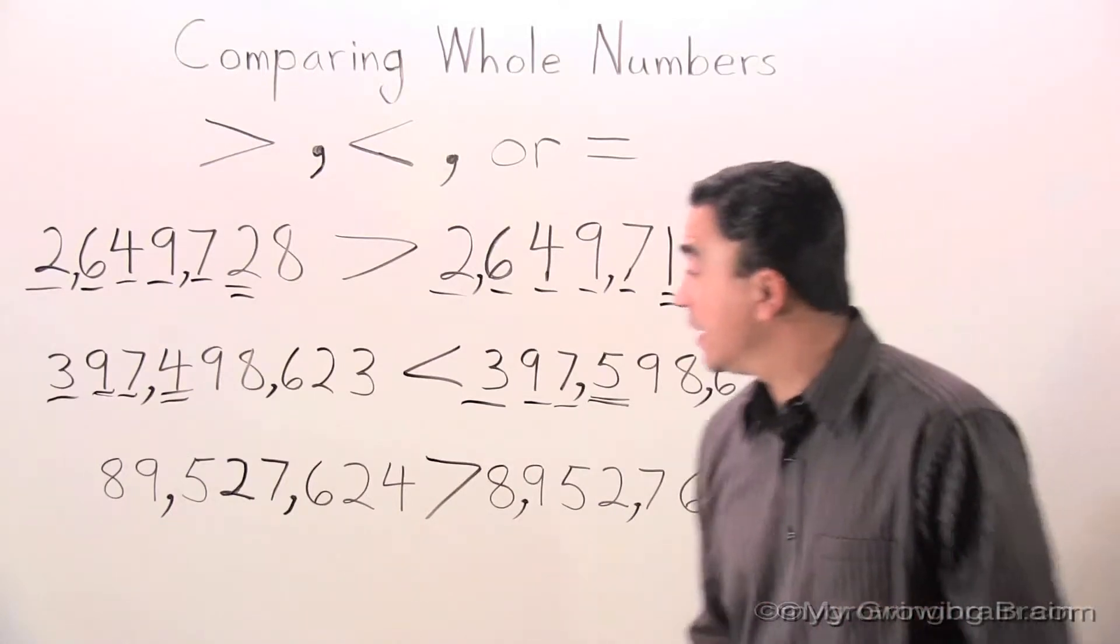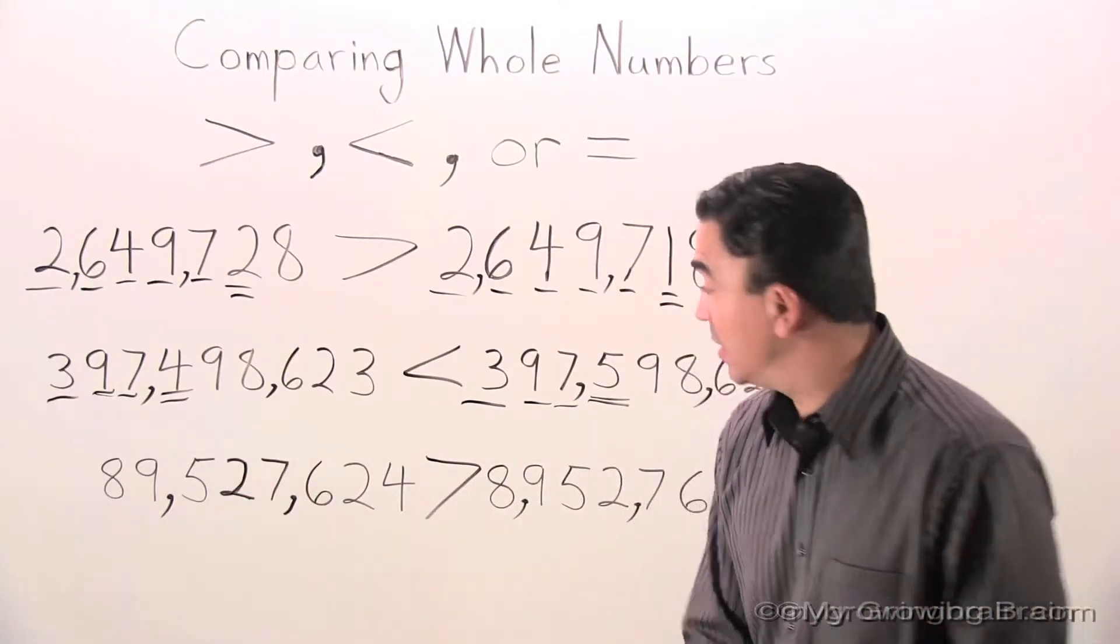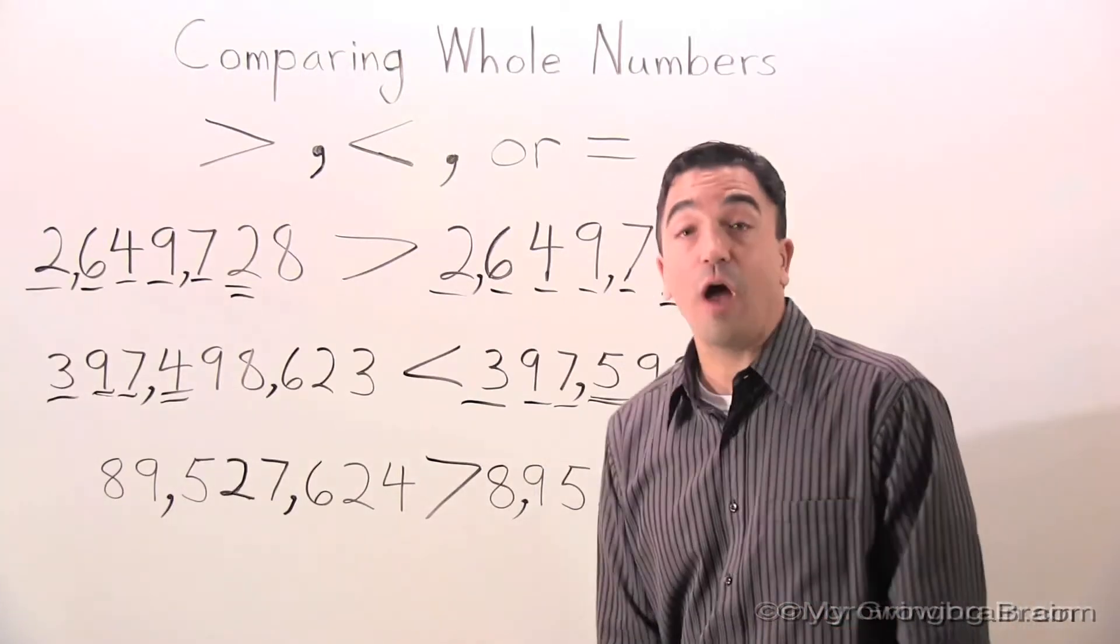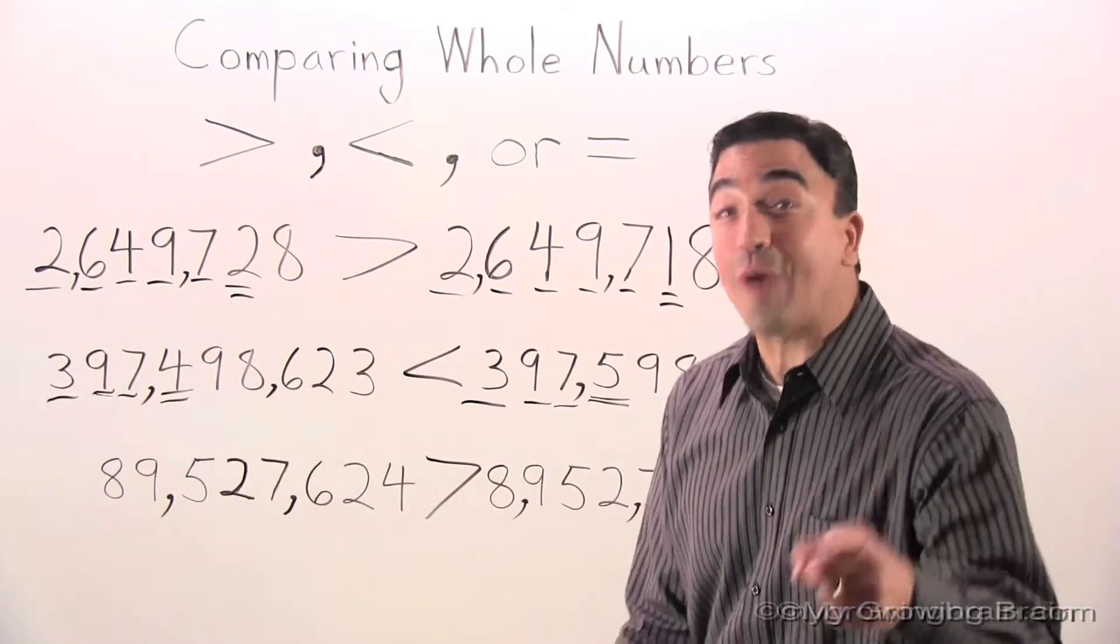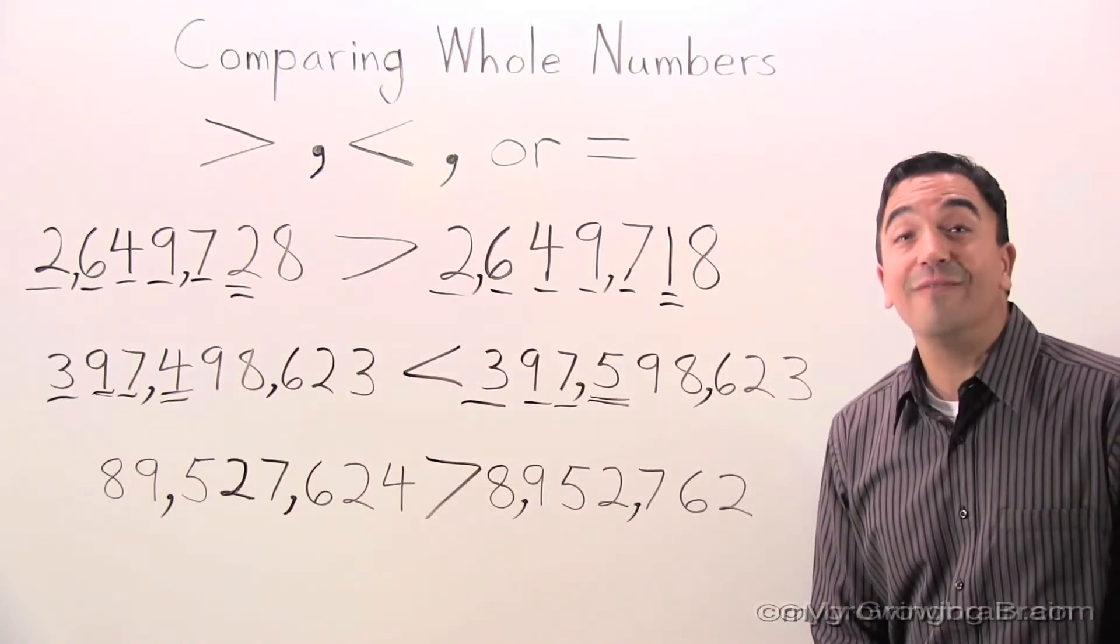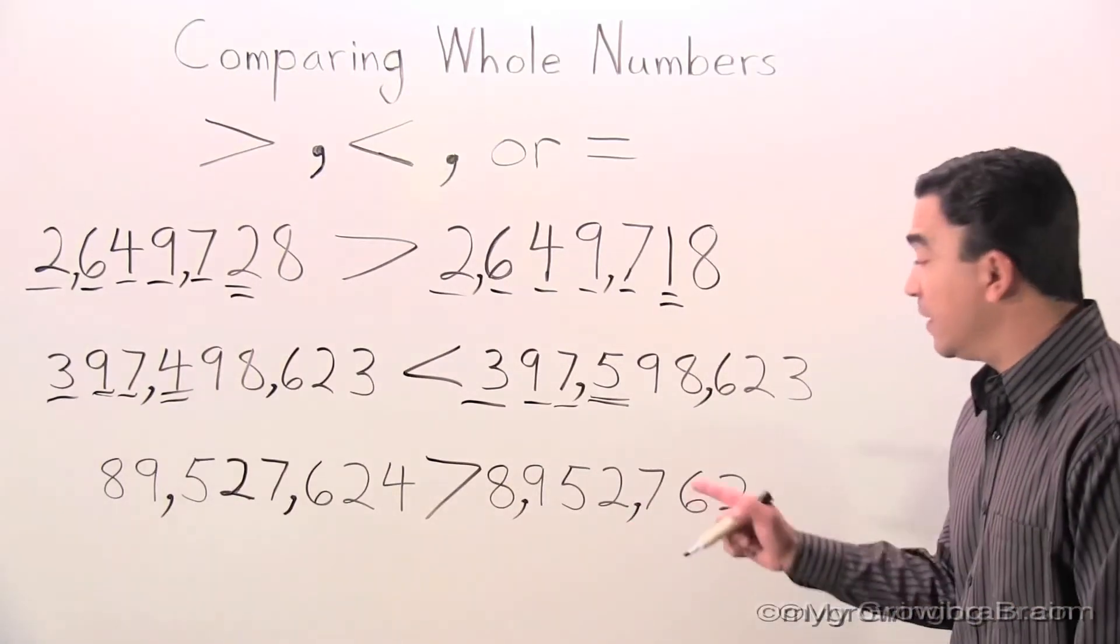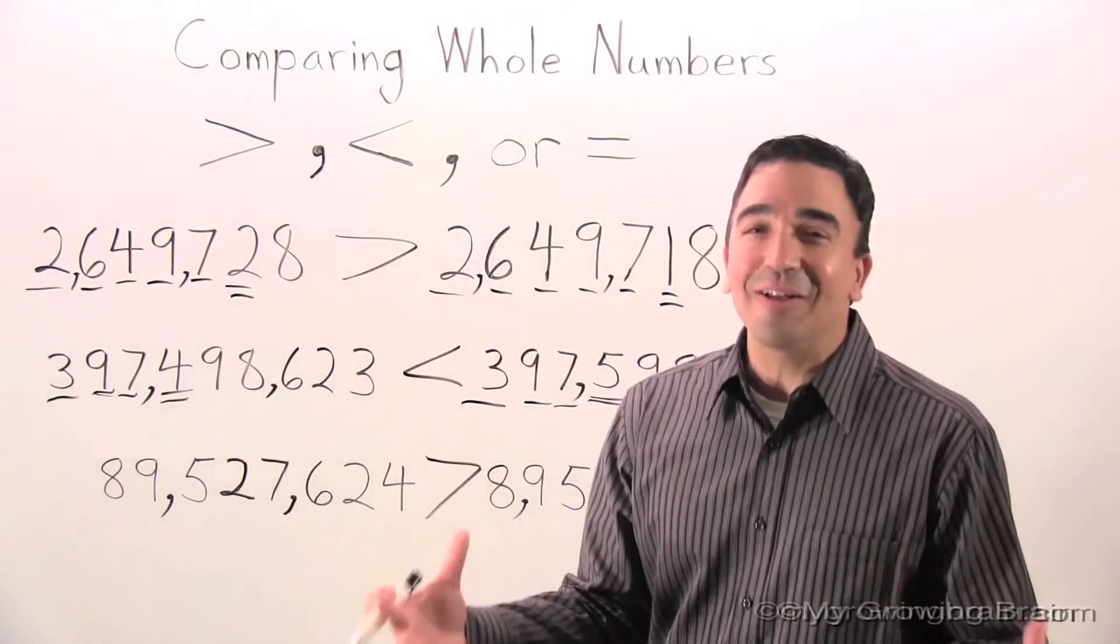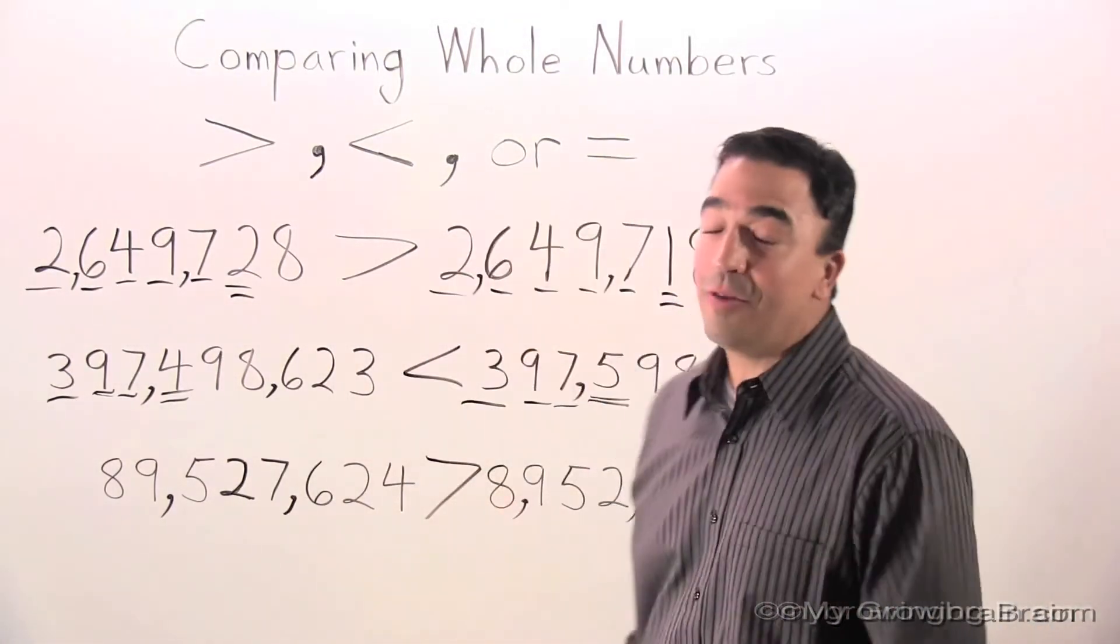Therefore, 89,527,624 is greater than 8,952,762. That concludes our lesson on comparing whole numbers. Coach Mike at Mind Growing Brain Challenge Yourself.